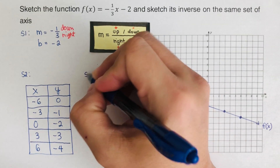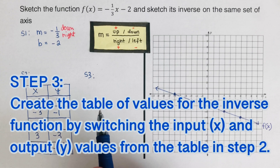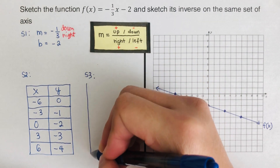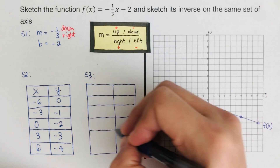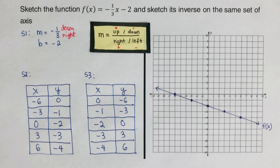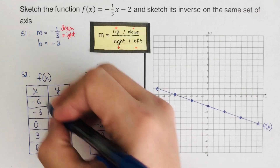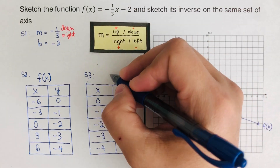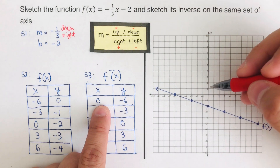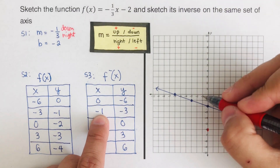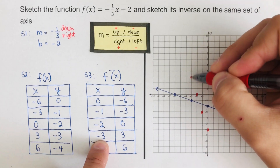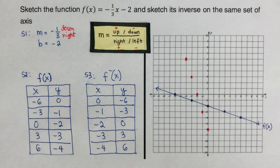Moving to step three: create a table of values for the inverse function by switching the input x and output y values from step two's table. We flip everything around — the values are switched to the other side. This gives us the table for f(x) on one side and the table for f⁻¹(x) on the other.